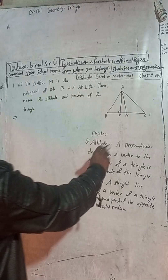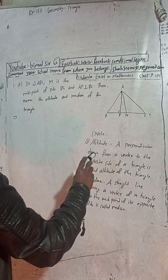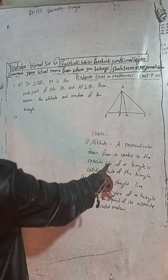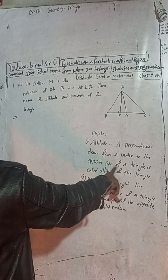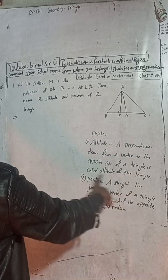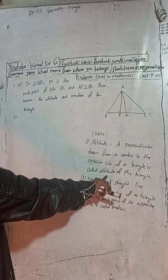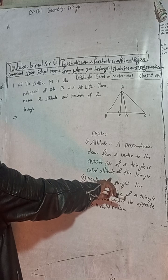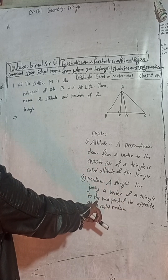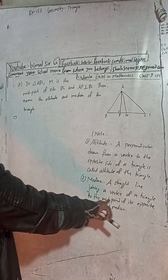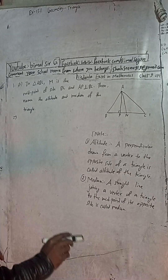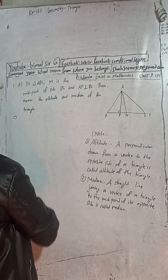A perpendicular drawn from a vertex to the opposite side of a triangle is called the altitude of the triangle. And what is median? A straight line joining a vertex of a triangle to the midpoint of its opposite side is called the median. Now we can write the solution.